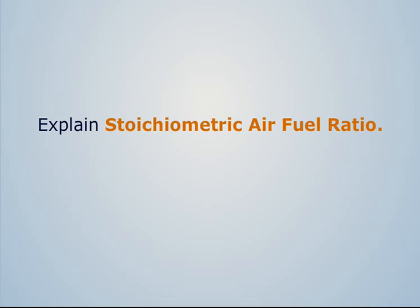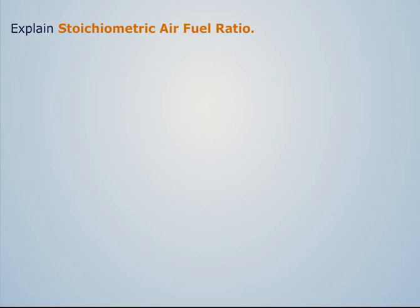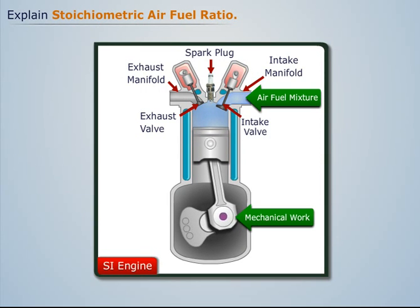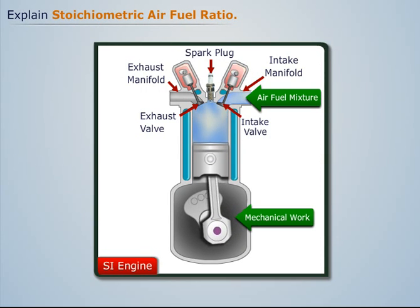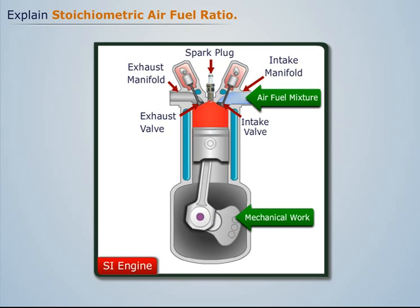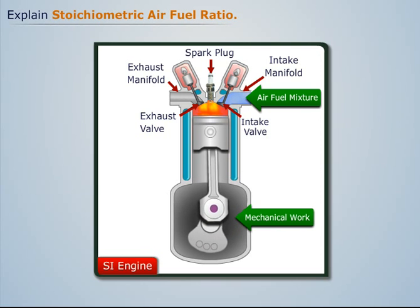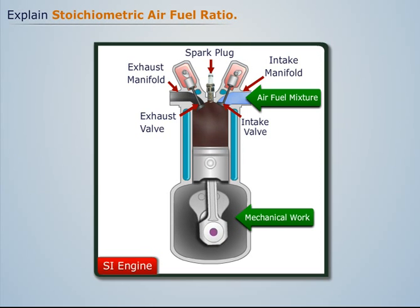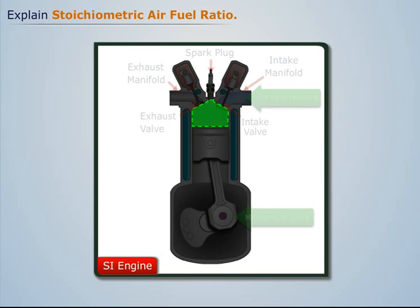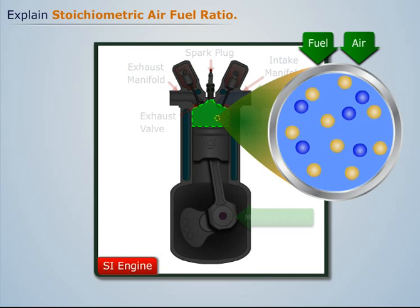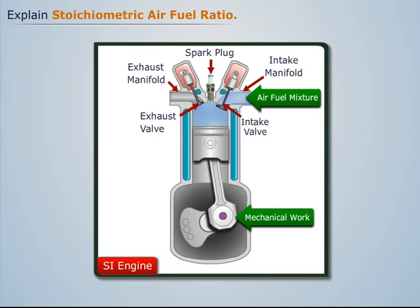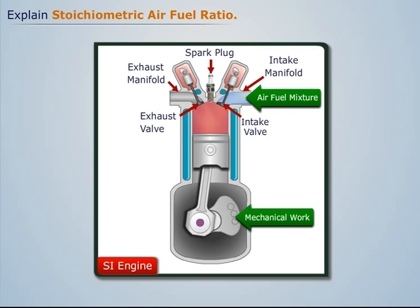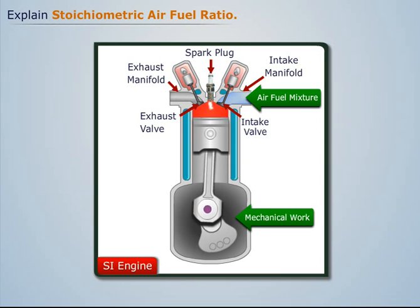Explain stoichiometric air fuel ratio. In an SI engine, a mixture of air and fuel enters into the cylinder and combusts with the help of a spark plug, thus producing power. The ratio of air to fuel in that mixture at which there is just enough oxygen to completely burn the fuel is known as the stoichiometric air fuel ratio.